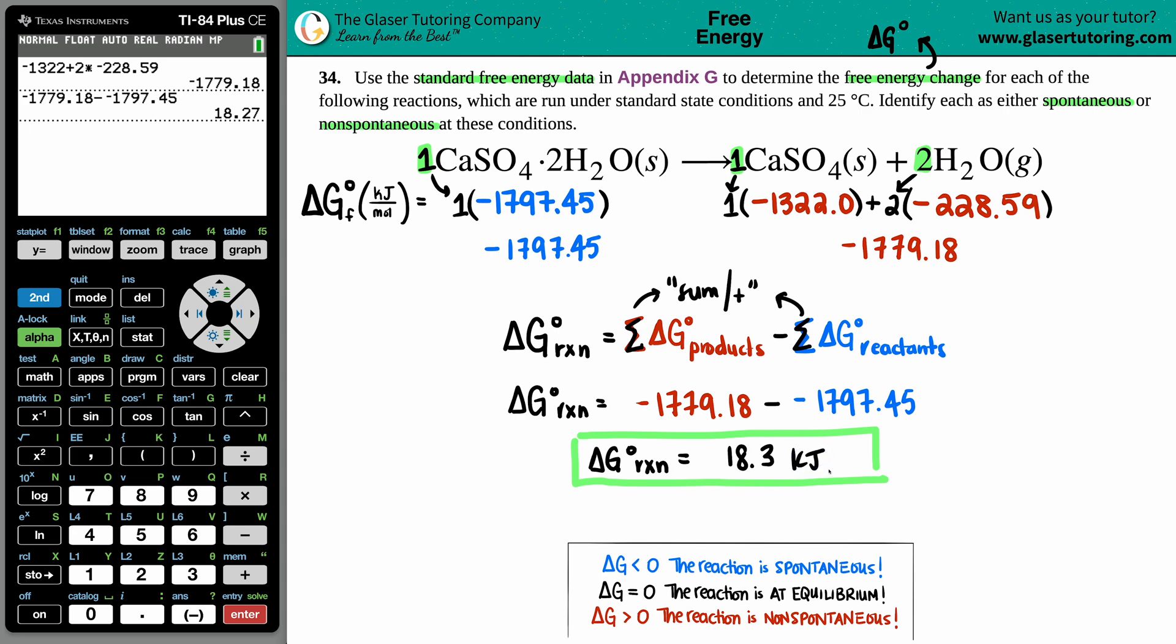Now we have to find out: is this spontaneous or non-spontaneous? Anytime you have a ΔG less than zero (a negative value), your reaction is spontaneous—it doesn't need any additional energy to produce your product. But if your ΔG is greater than zero (a positive), that means it's non-spontaneous—it needs that extra push from an outside source. In this case, it's 18.3, a positive value, so this is non-spontaneous.